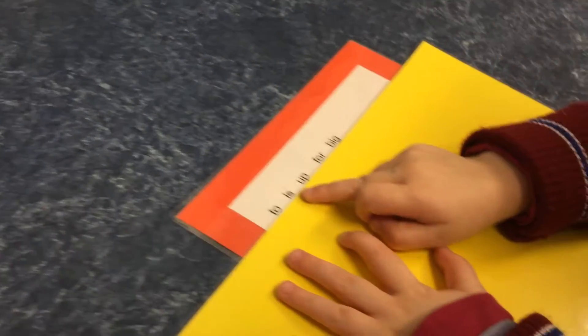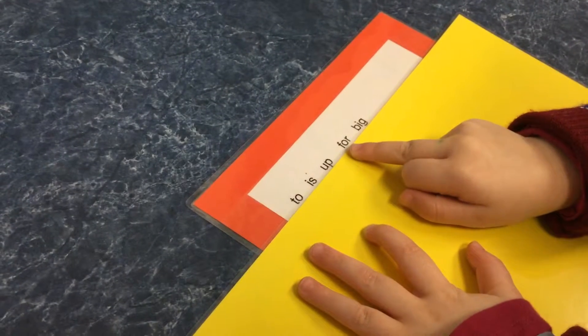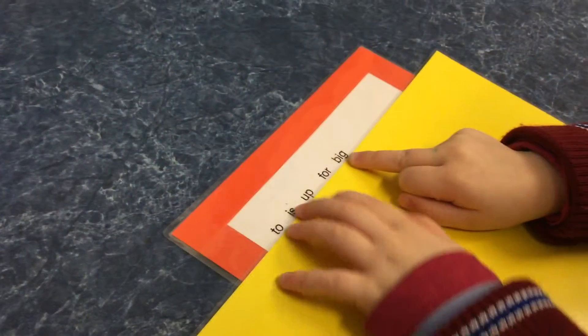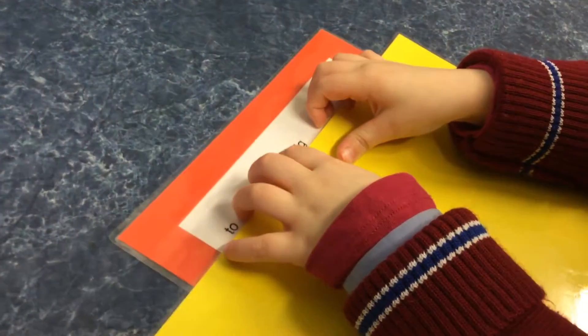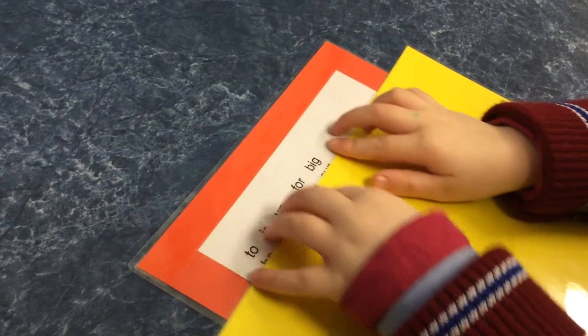Read these words. Let's start here. Two is up for d, b, e, g... big.